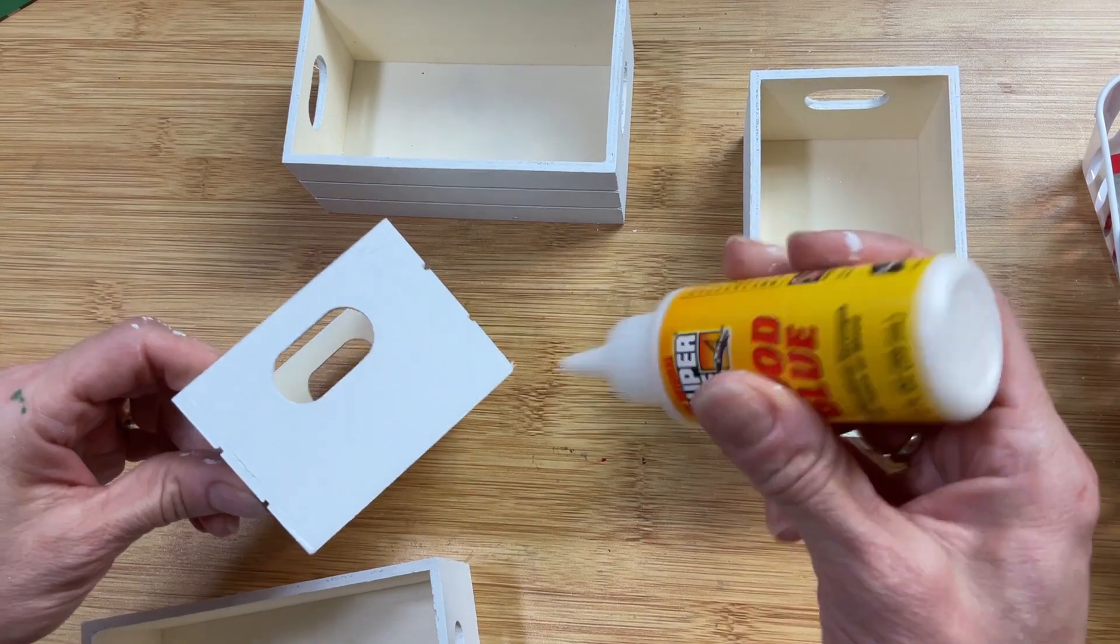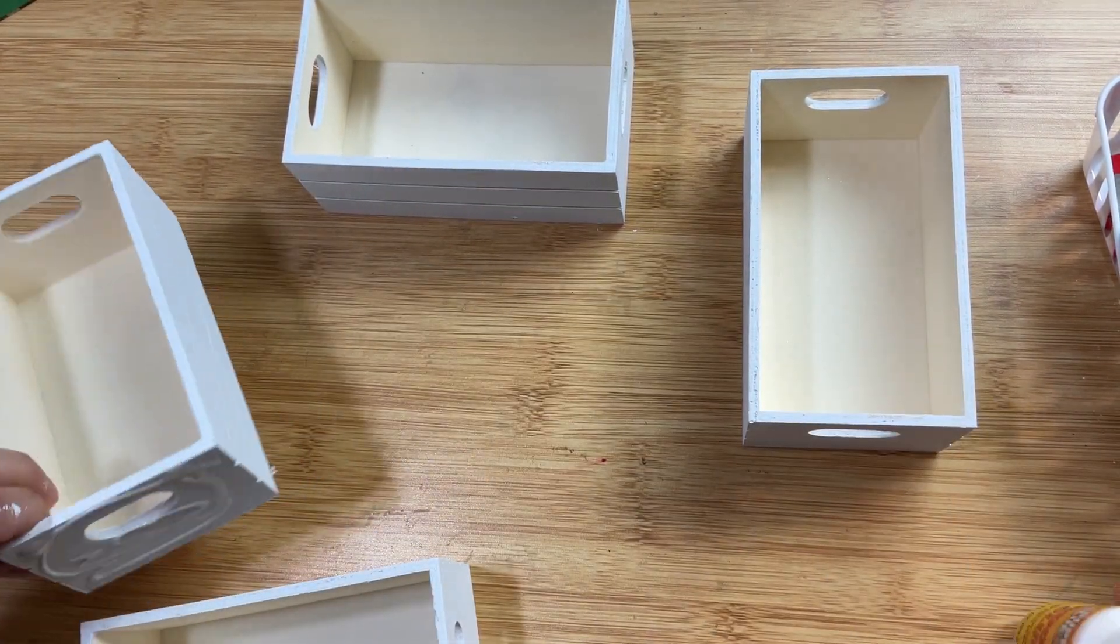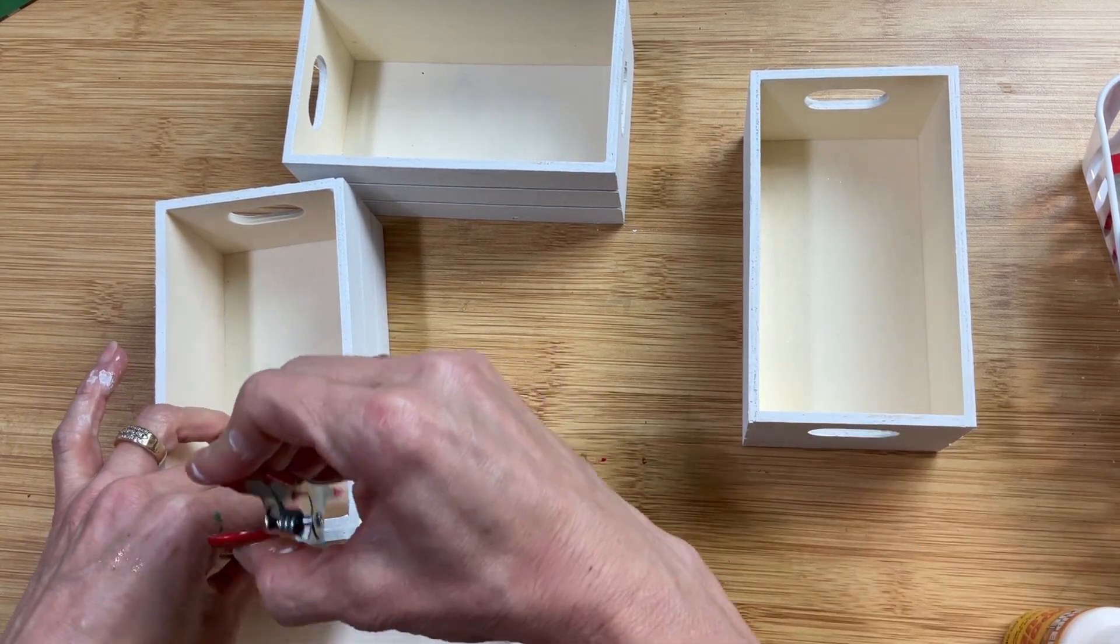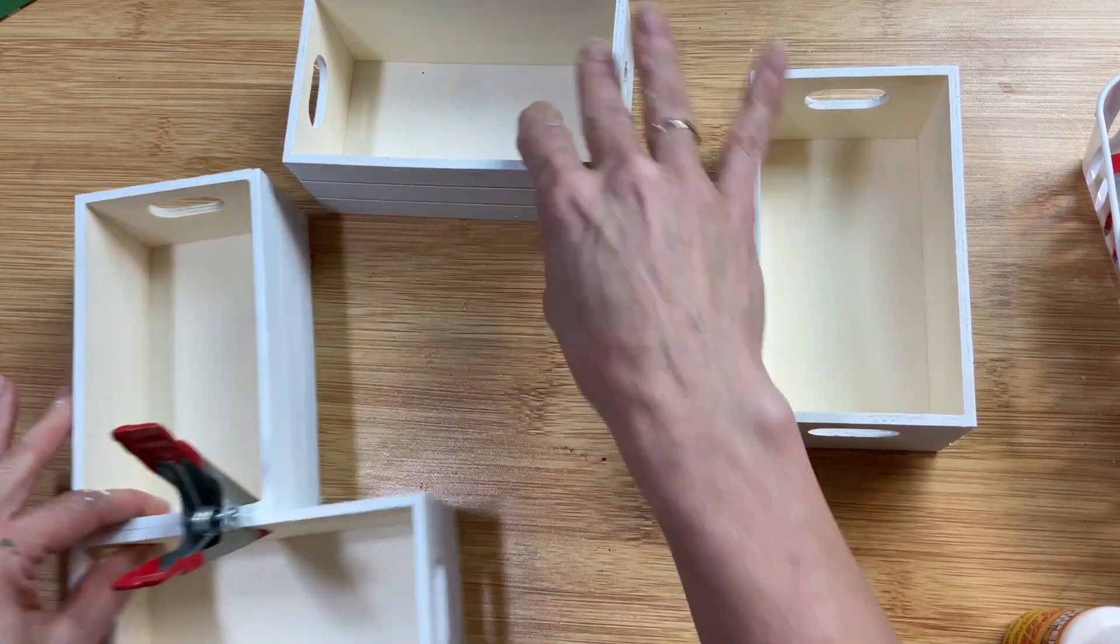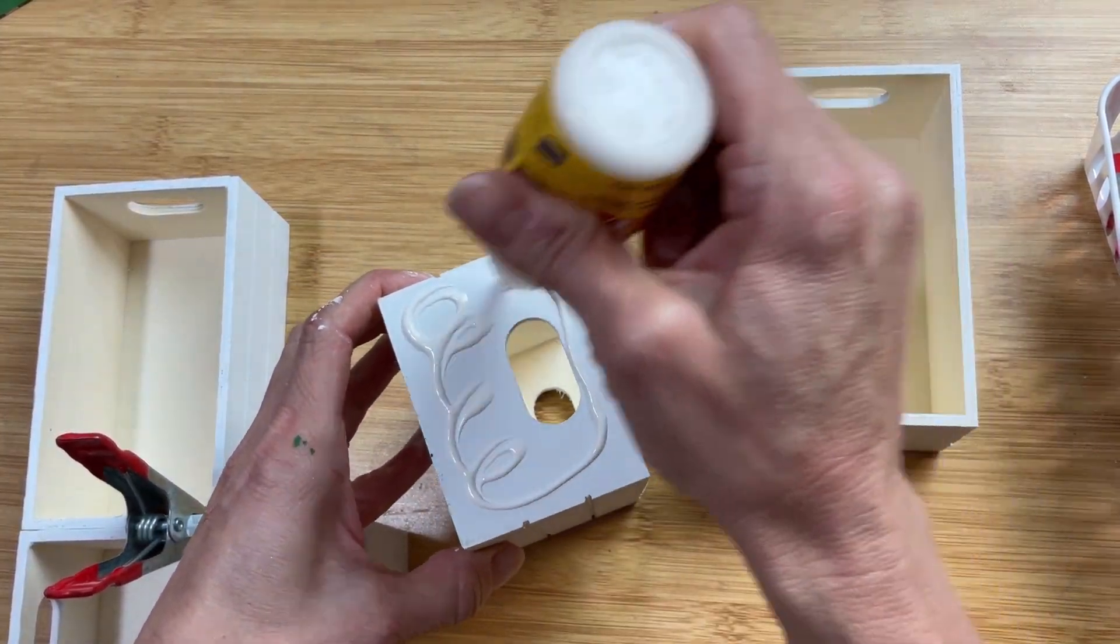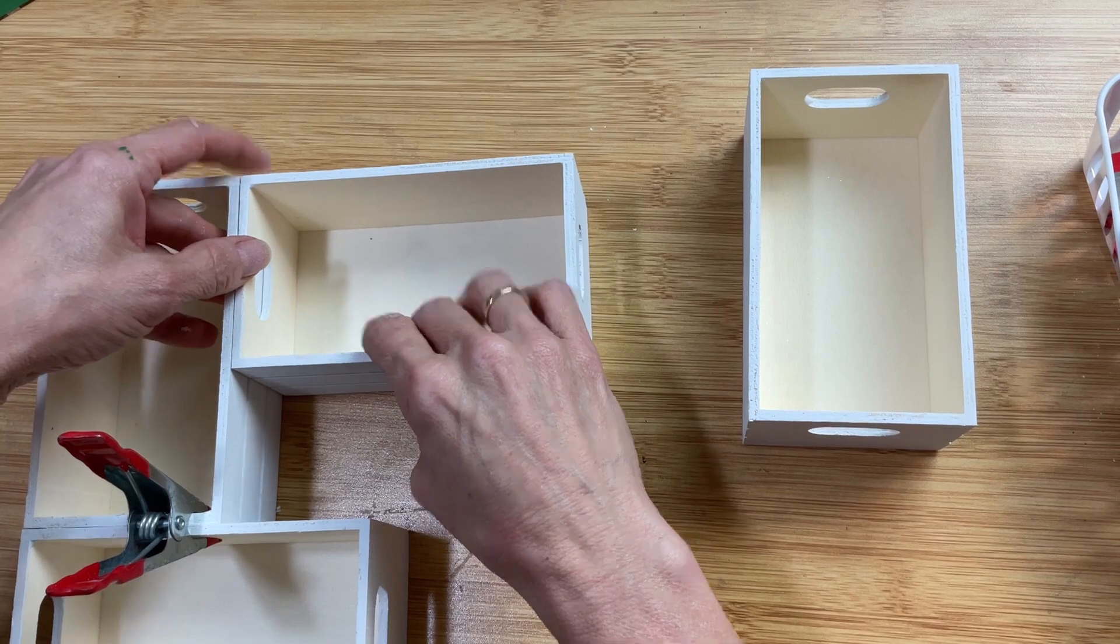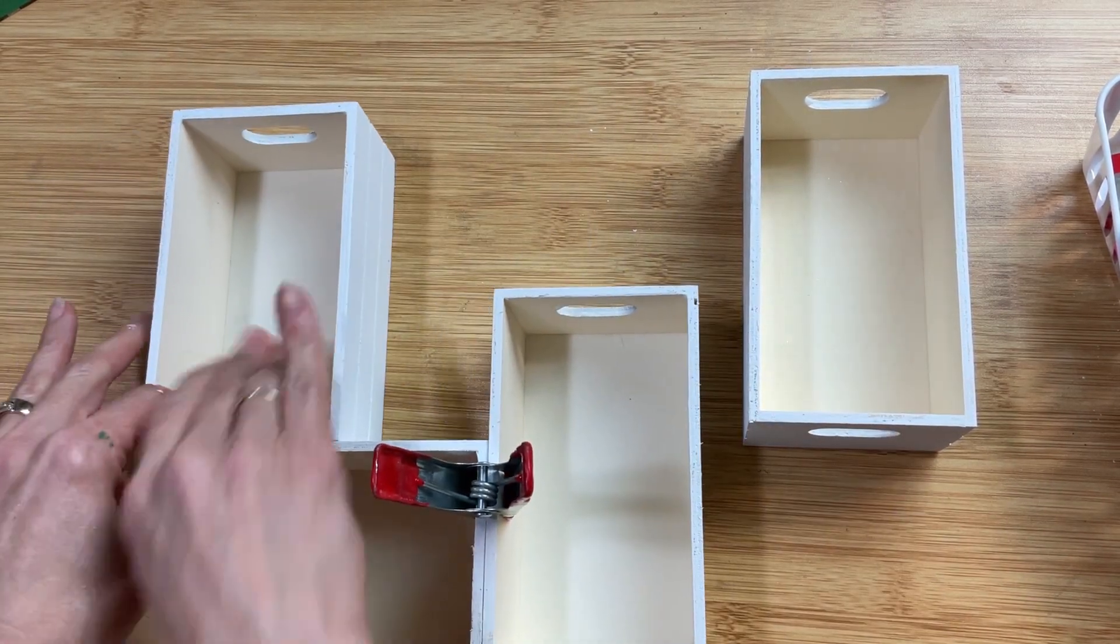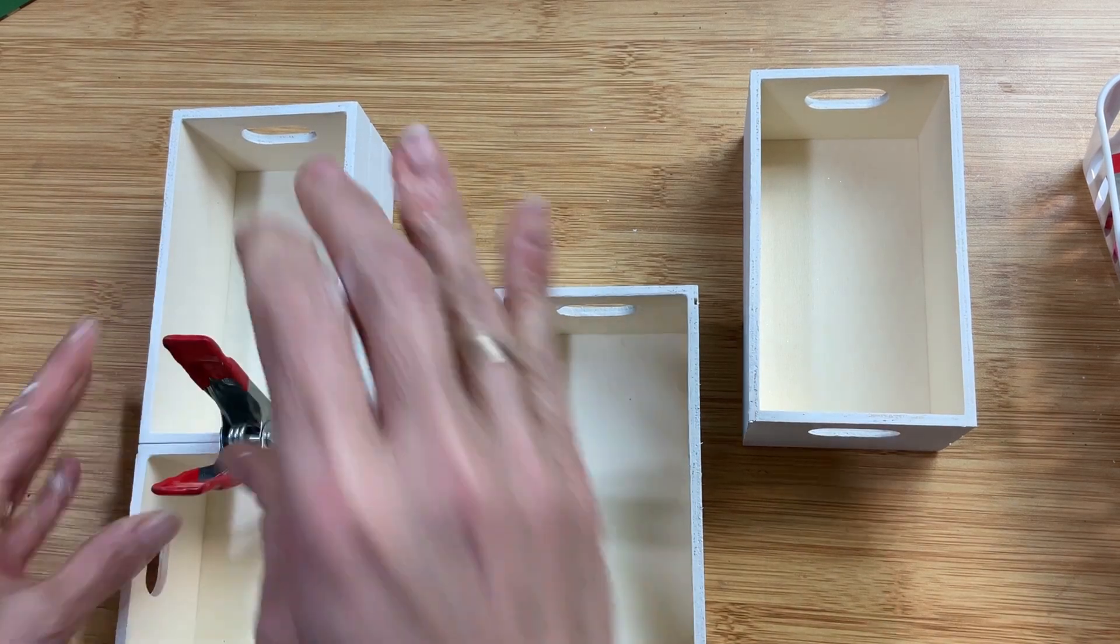Now I'm going to take all four of my crates and I'm going to use wood glue and clamps and I'm going to glue them together in a square. You're going to see me use this square method in our final DIY as well but just using some wood glue and clamping them together you can see how I'm putting them all together in a square that's going to leave a small square hole in the center.